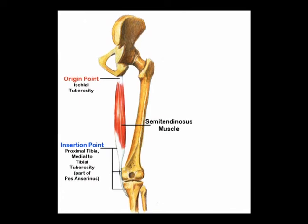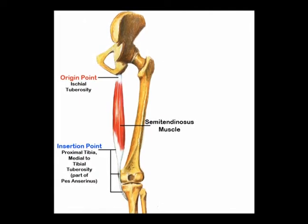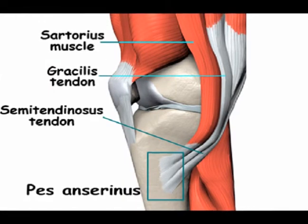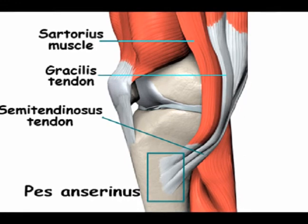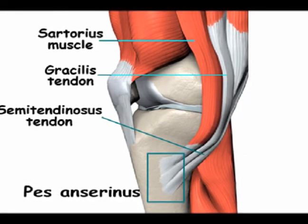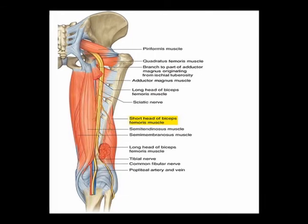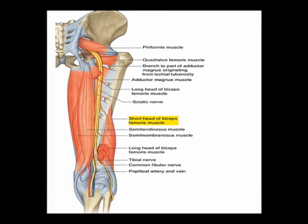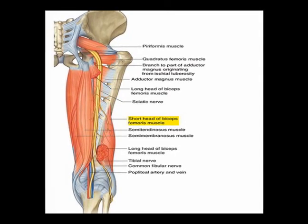The origin of the semitendinosus muscle is the ischial tuberosity. The insertion is at the pes anserine, along with the insertion of the sartorius muscle and the gracilis muscle, on the superior medial tibia. The innervation is the tibial nerve, which is a branch of the sciatic nerve from vertebral levels L5, S1, and S2.